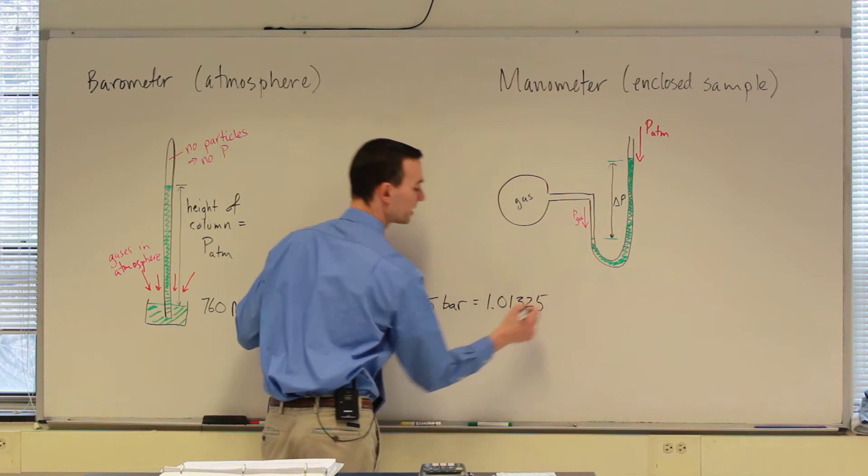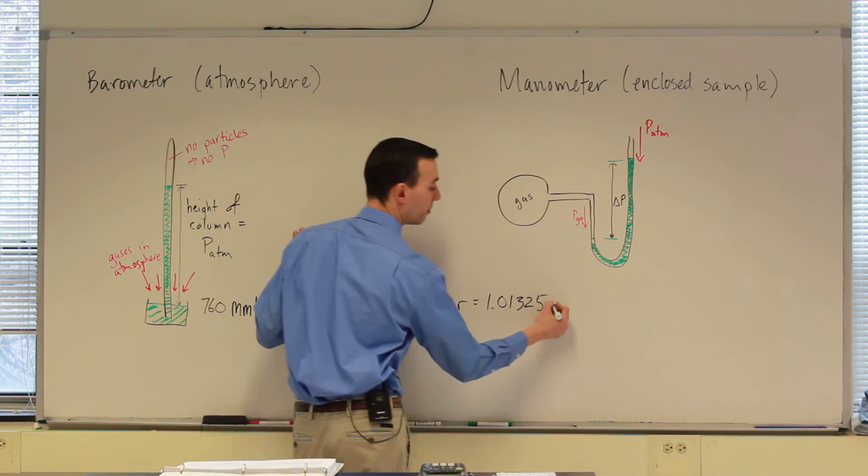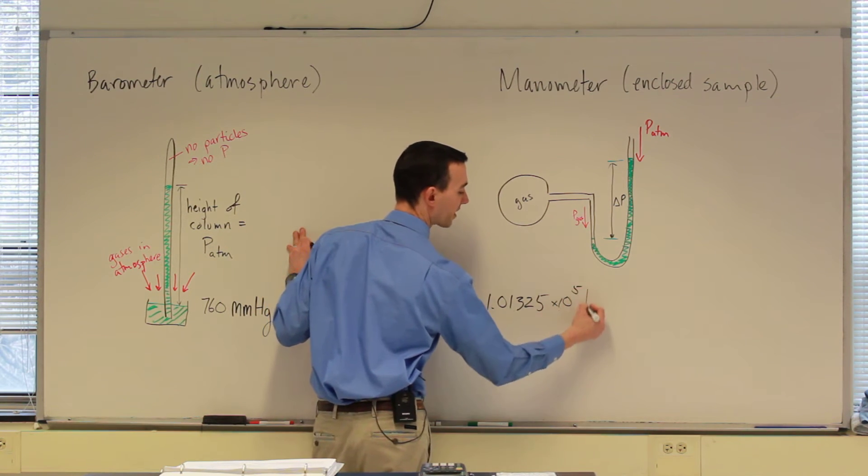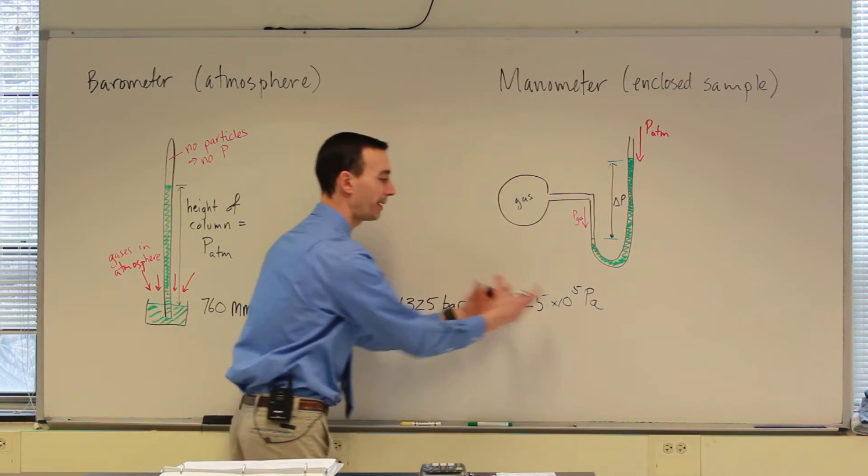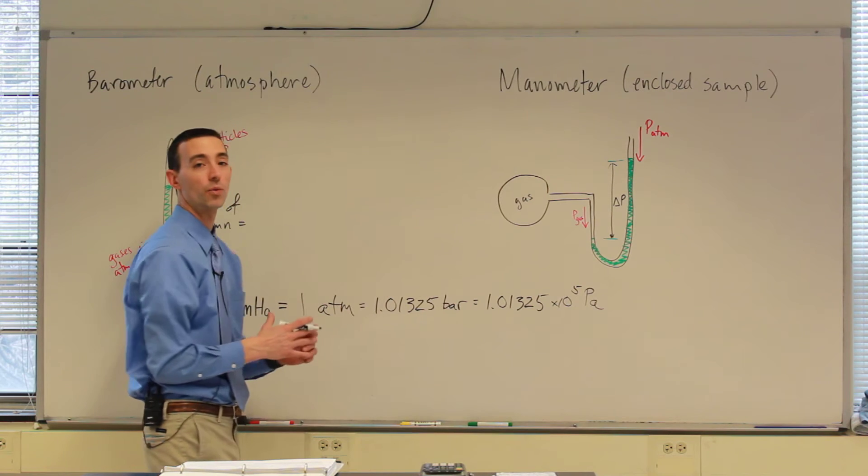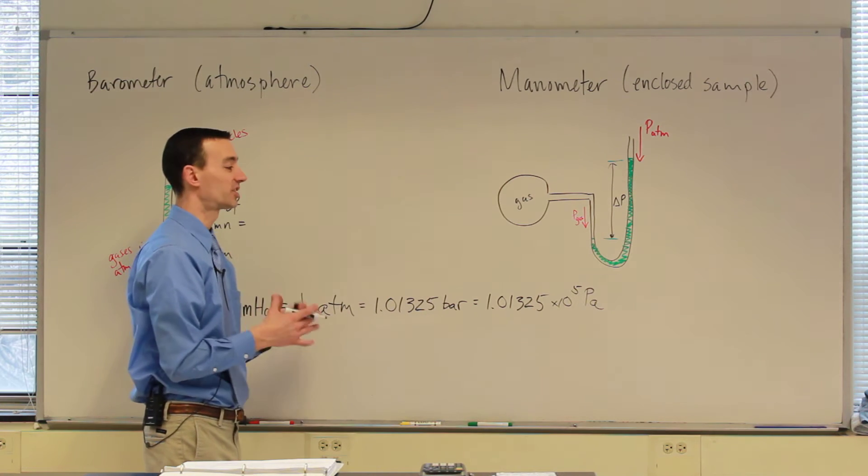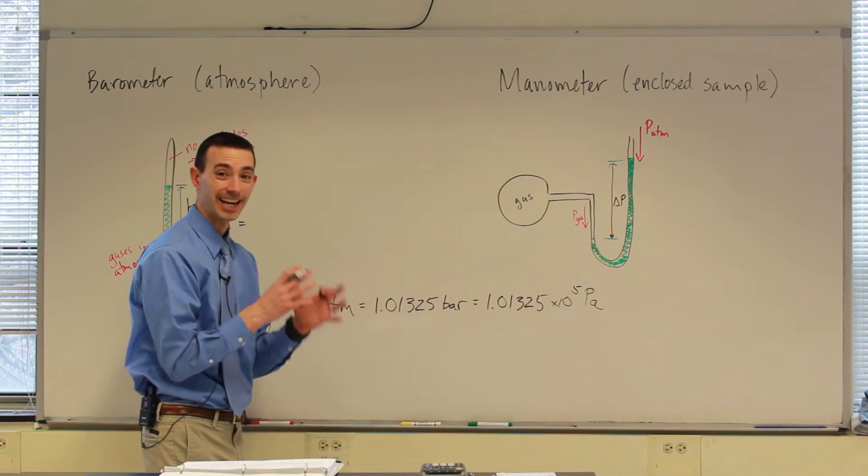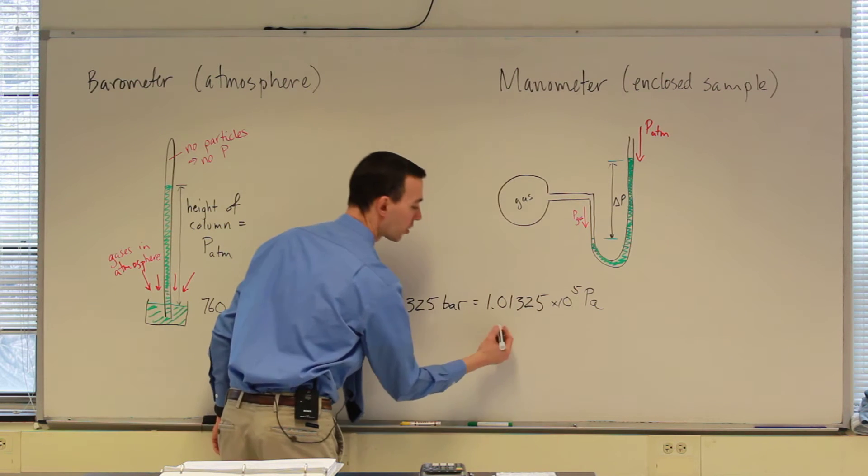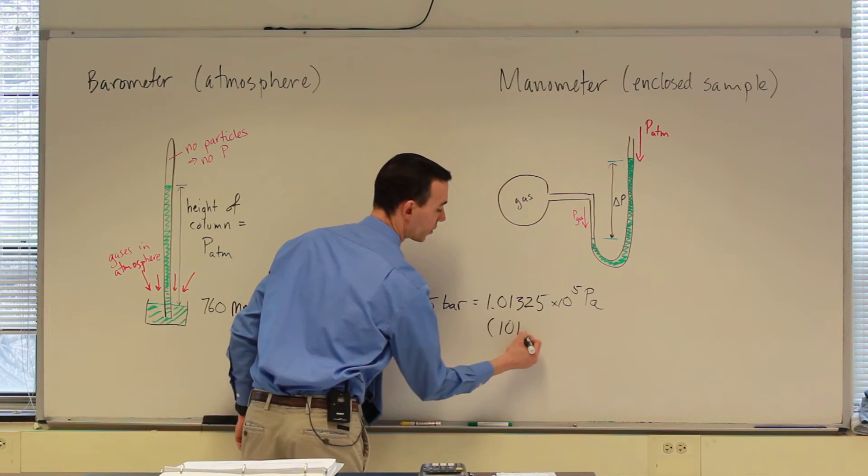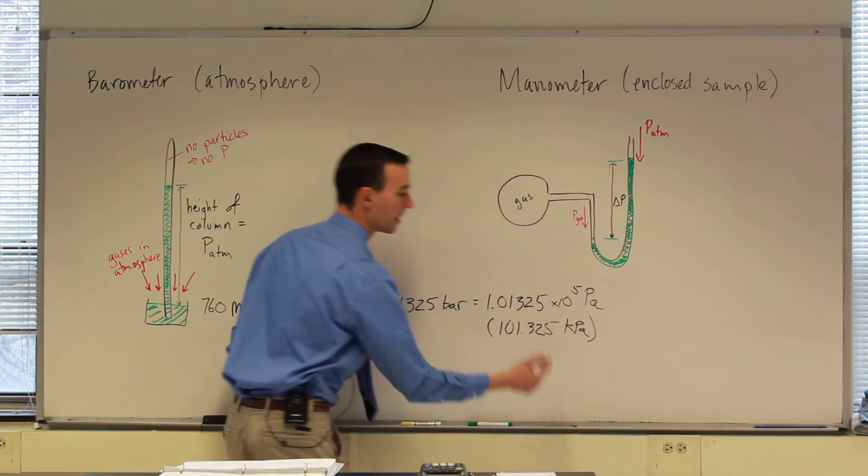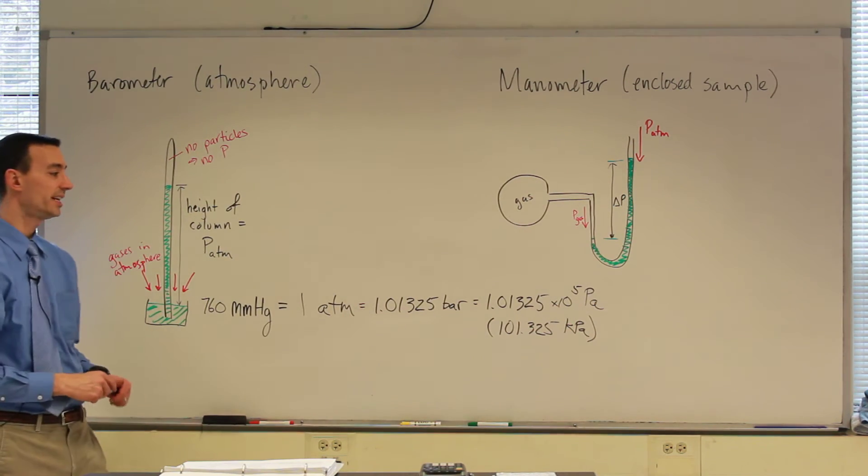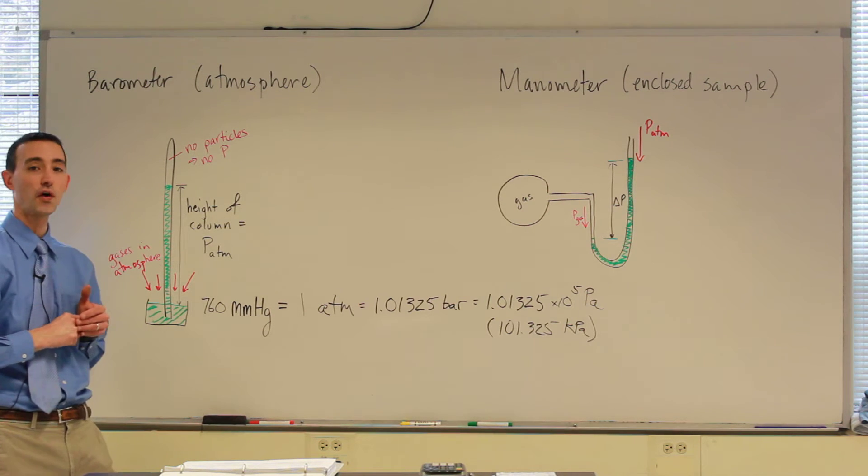And the bar is related to another unit called the Pascal. The same number, 1.01325, but times 10 to the fifth Pascal. So that's 101,000 Pascals equaling one bar. And so that's how tiny the Pascal is. Another way of thinking about this is it's 101.325 kilopascals.